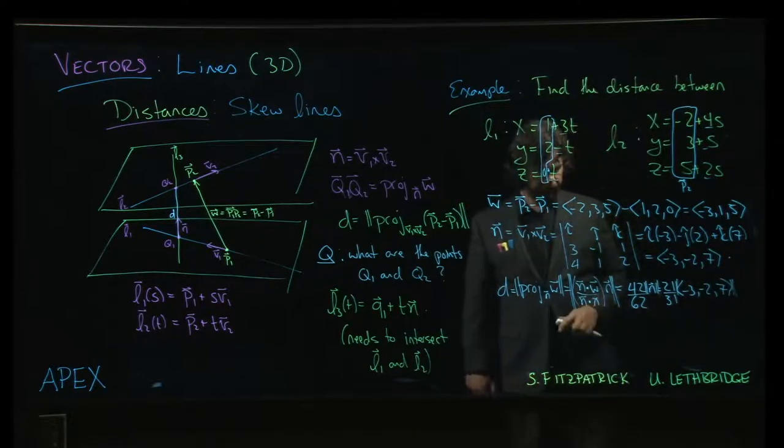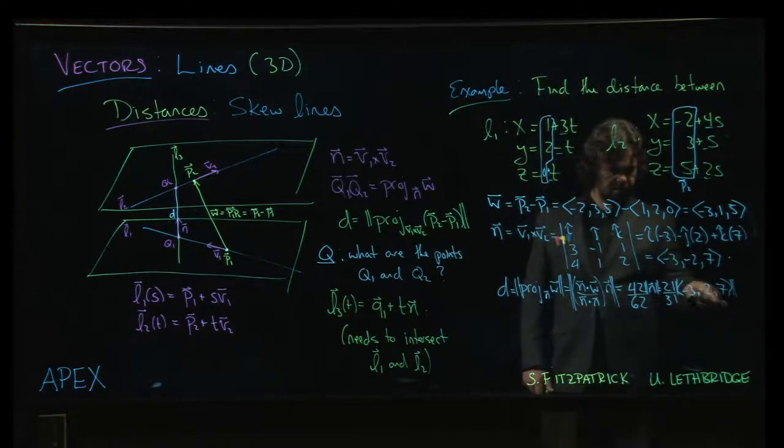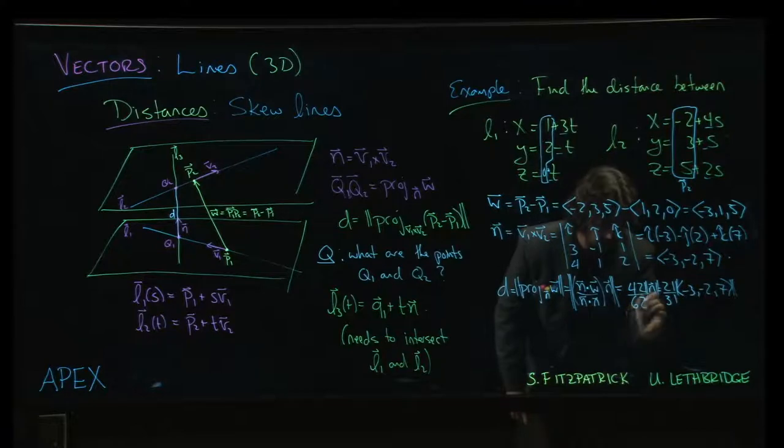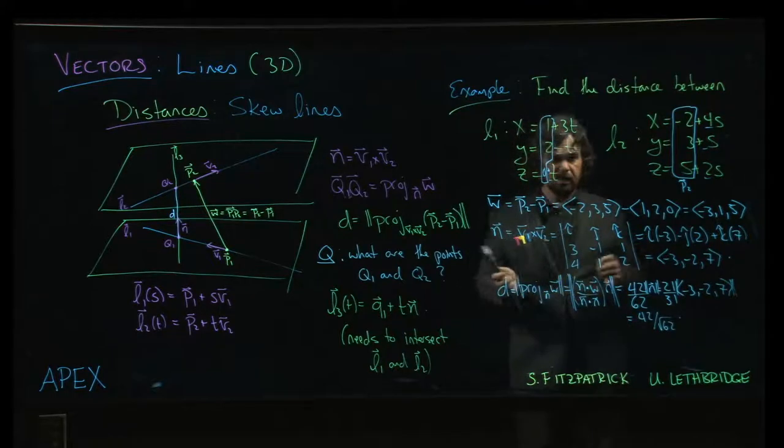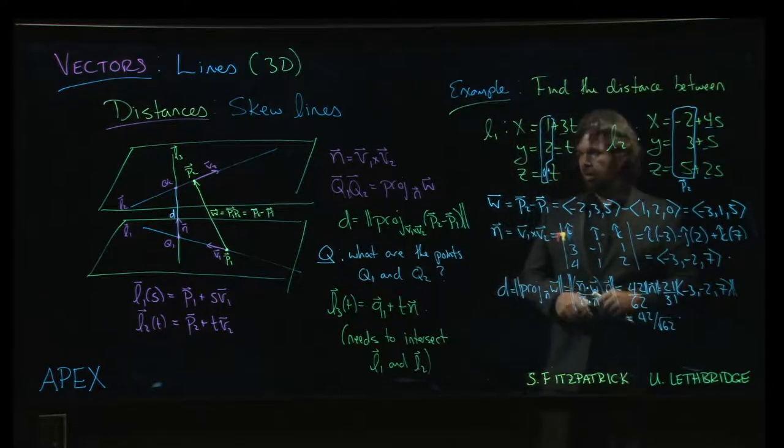And that is going to be that 62 again, right? So maybe it would have been better to leave it there with the, so it's 42 over the square root of 62. And you can clean that up if you are so inclined.